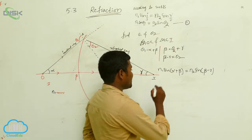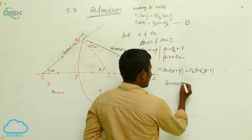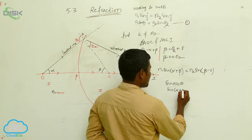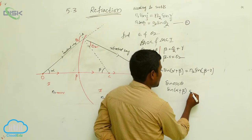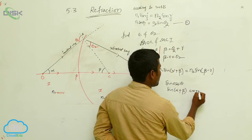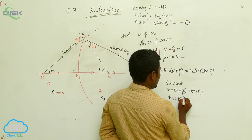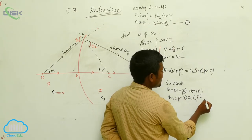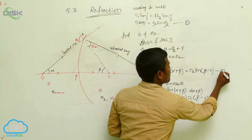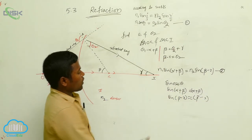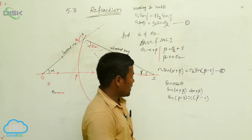In the previous case, we generally consider sin θ ≈ θ, because the angle may be very small and we can neglect the difference. That's why we write nearly equal to. So sin(α + β) ≈ α + β, and sin(β − γ) ≈ β − γ. We can substitute these values into equation number 2, giving us: n1(α + β) = n2(β − γ).